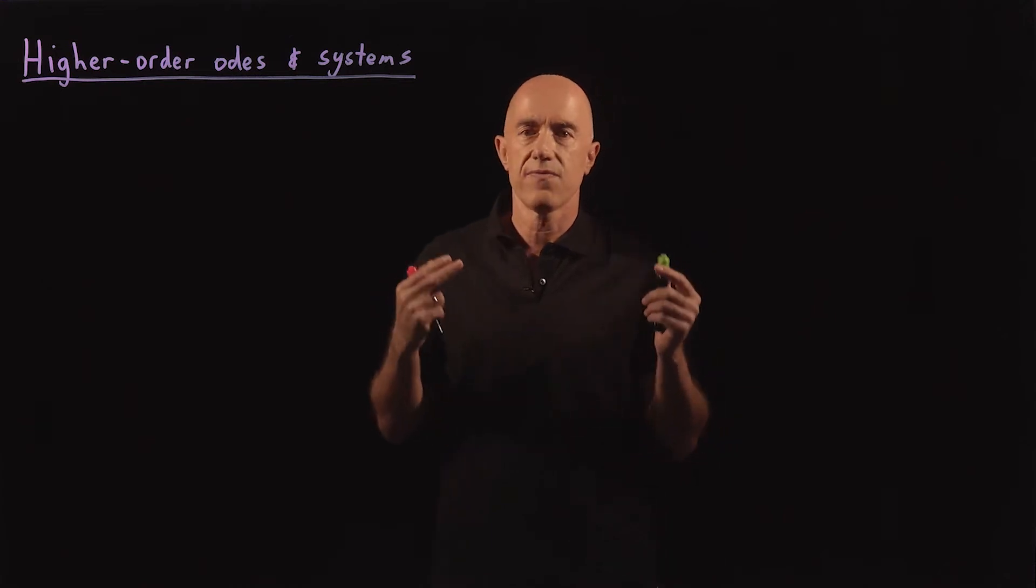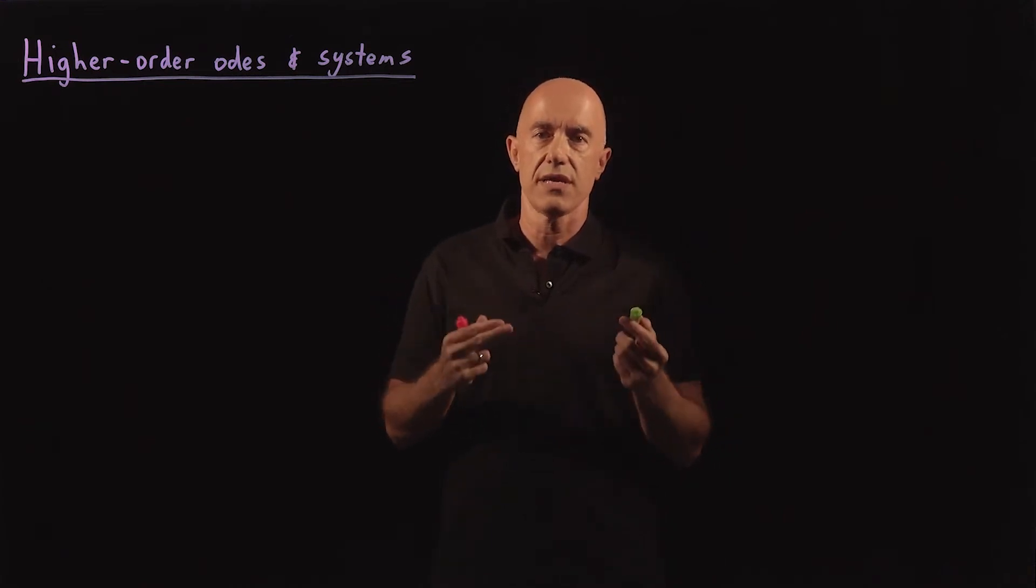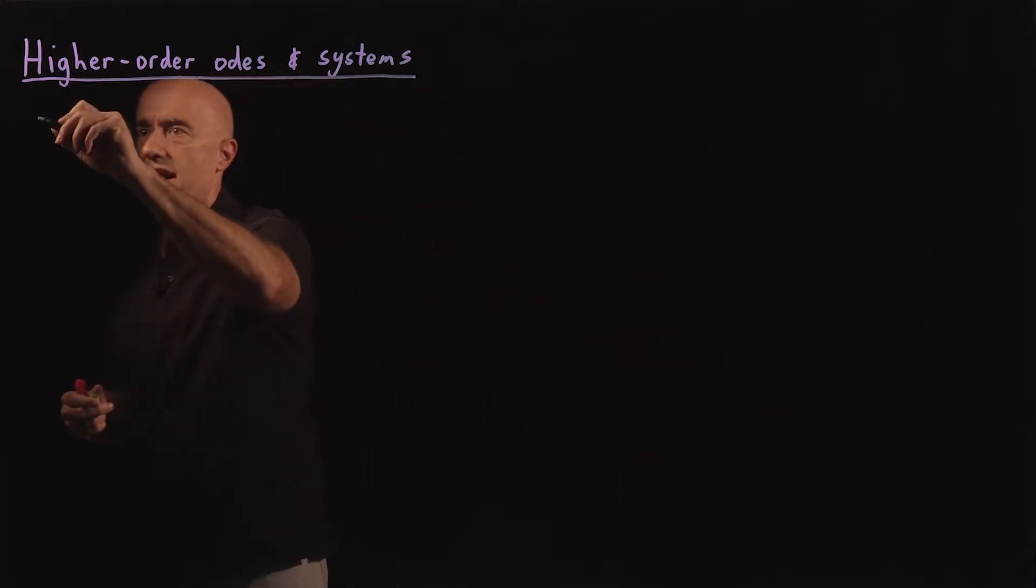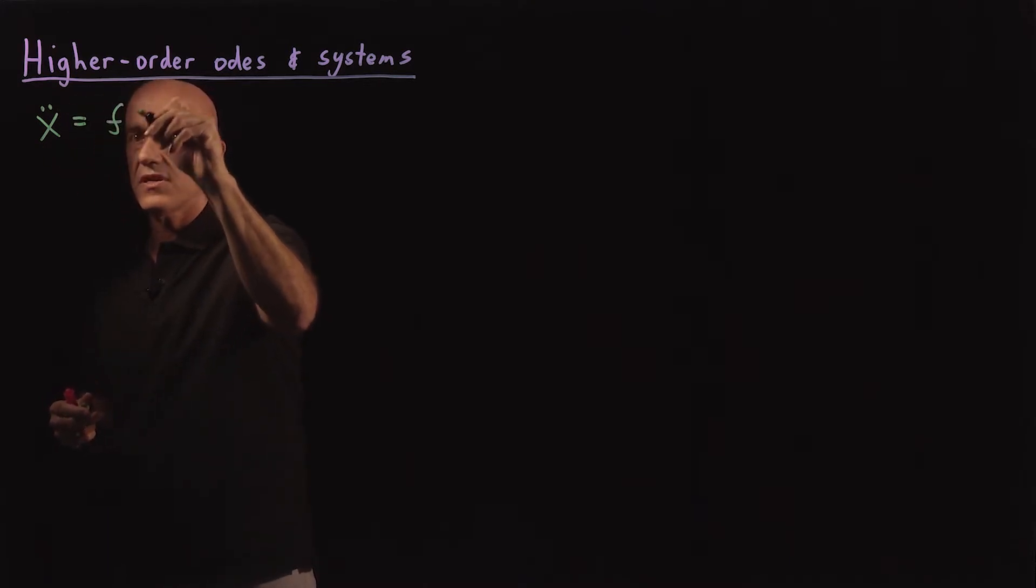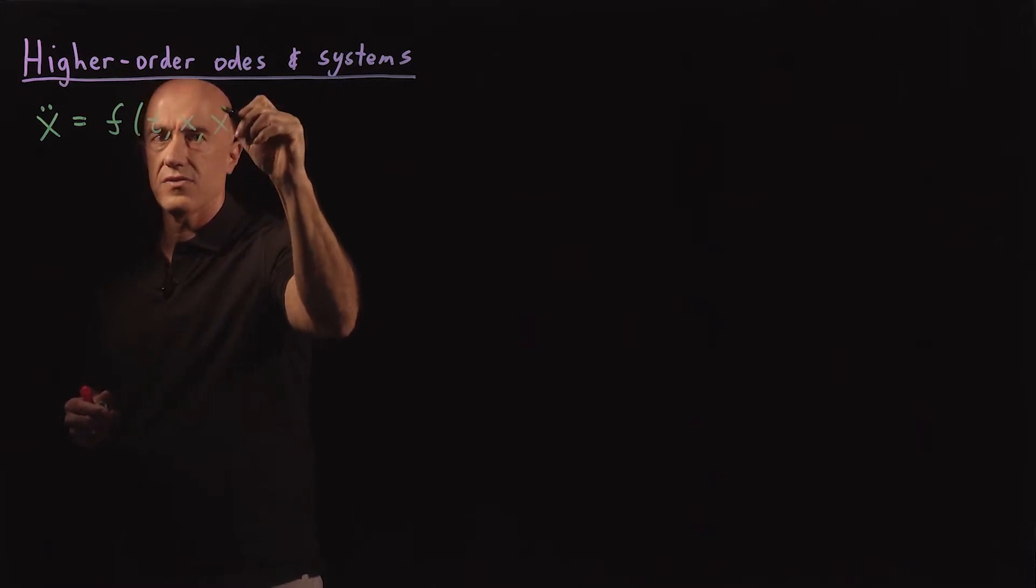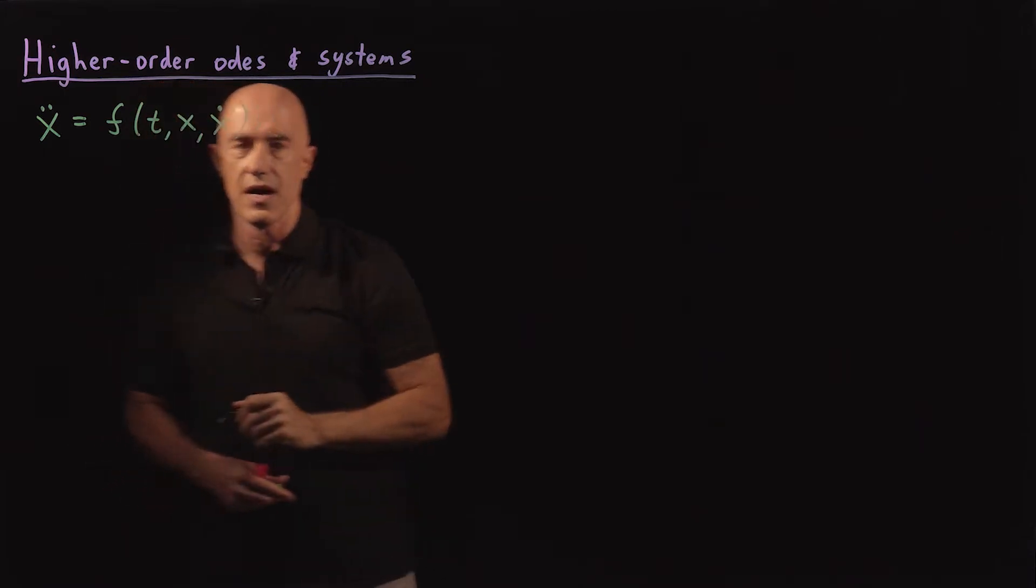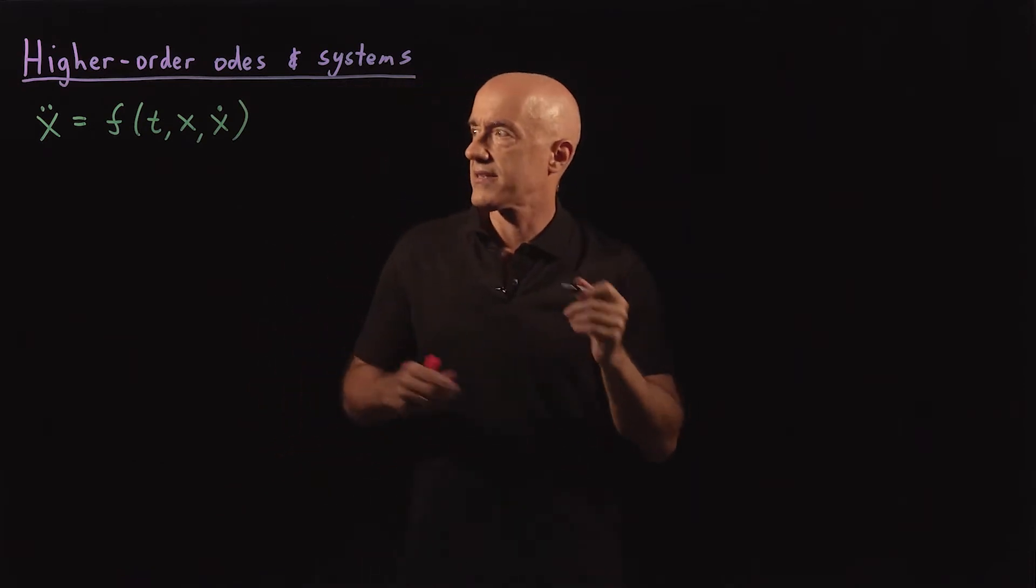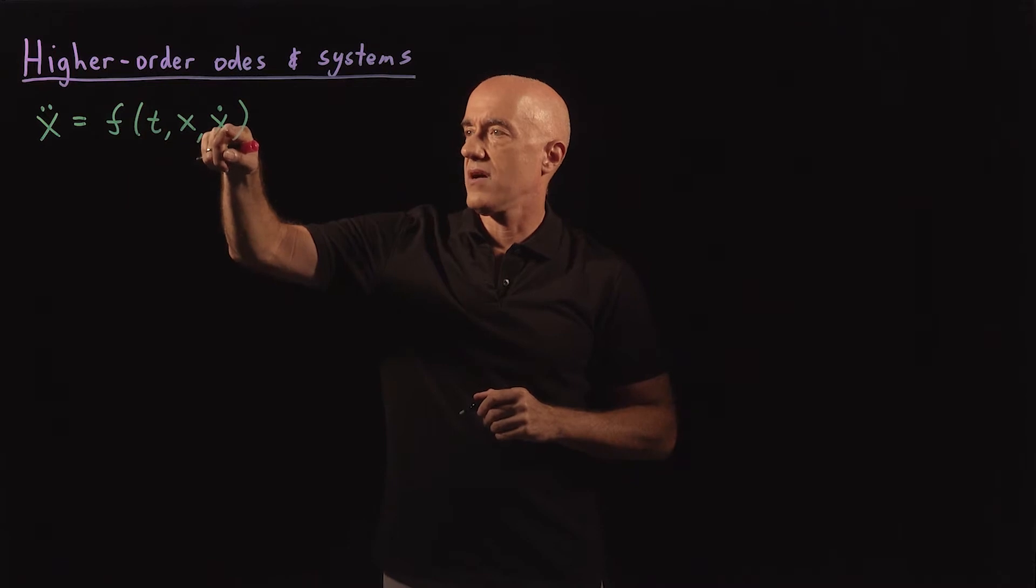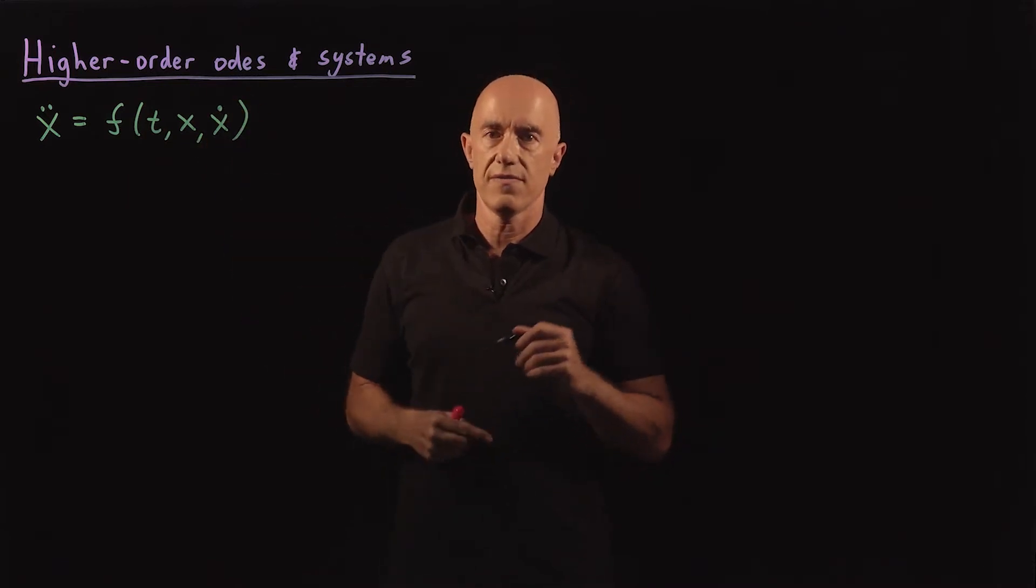So let's first start by seeing how you would integrate a second-order differential equation. Let's say we have x double dot, d squared x dt squared, is some function of t, x, and the derivative can also depend on x dot. Or the second derivative of x can also depend on the first derivative of x.